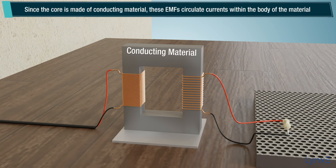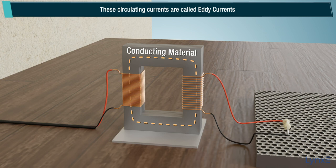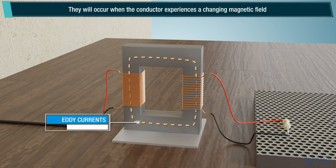Since the core is made of conducting material, these EMFs circulate currents within the body of the material. These circulating currents are called eddy currents. They will occur when the conductor experiences a changing magnetic field.